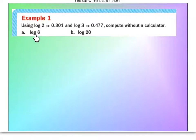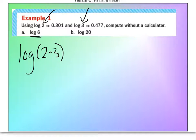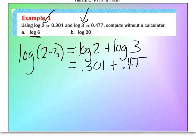They want us to take the log of 6 and expand it using log of 2's and log of 3's, given that log of 2 equals 0.301 and log of 3 equals 0.477. The number 6 is 2 times 3, so by the product property, this is the same as log of 2 plus log of 3. Substituting in the values: 0.301 plus 0.477 equals 0.778.